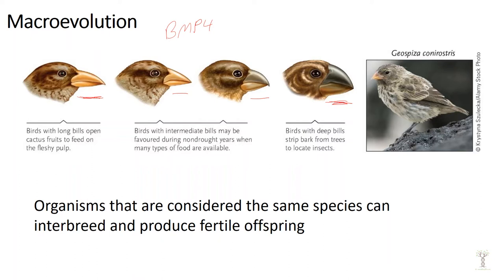Some finches have a long skinny beak and some have thicker shorter beaks. The beak shape and size phenotype gives them different advantages in different environments. Birds with a small skinny beak are better able to eat cactus, whereas a bird with a big beak can rip bark from trees to find insects or eat bigger, harder seeds. Over time these finches developed differences that made them more fit for their specific environment, and over really long periods of time they became different species.